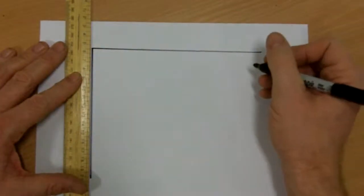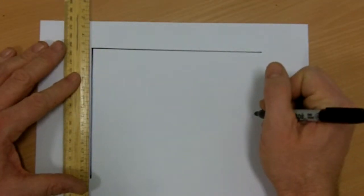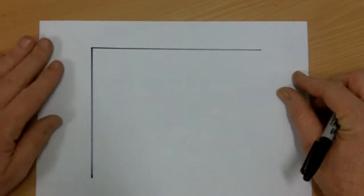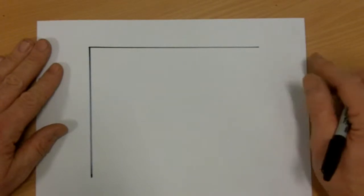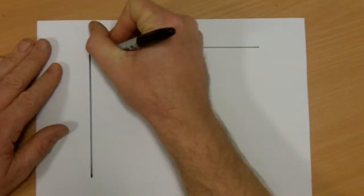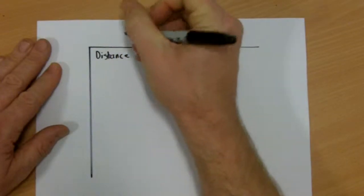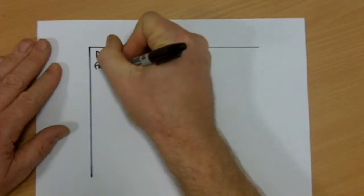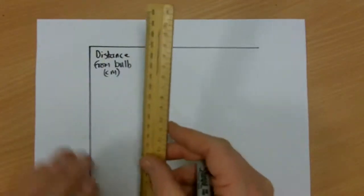And I'm going to have enough space for all of my readings plus an average. So this is an investigation into how the distance of a solar panel from a light bulb affects the voltage made by the solar panel. So my first column, I'm going to have my independent variable. And these are the distances that I have chosen. And notice that I've got the name and the unit in the heading.